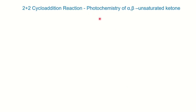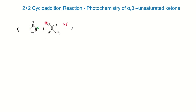Now we will see examples of 2+2 cycloaddition involving alpha-beta unsaturated ketones. When you have an alpha-beta unsaturated ketone and an alkene under photochemical condition, think of 2+2 cycloaddition between carbon and carbon. An important point: the addition always takes place from the alpha carbon of the alpha-beta unsaturated ketone. The alpha-beta unsaturated compound goes to the triplet state after ISC.